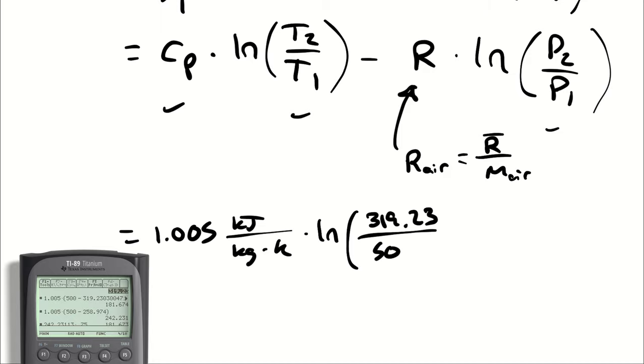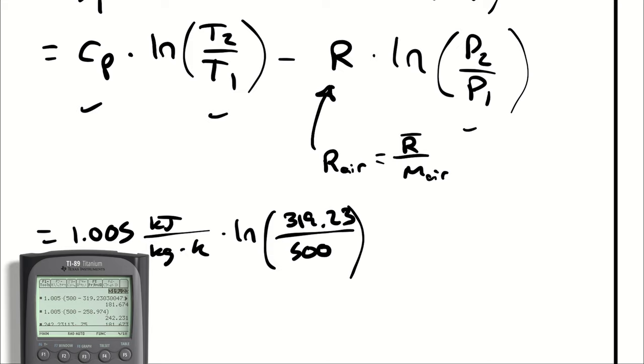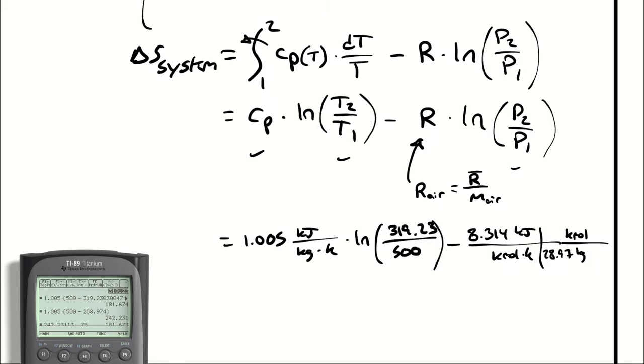Then I'm dividing by T1 which is 500, then I'm subtracting 8.314 kilojoules per kilomole kelvin divided by 28.97 kilograms per kilomole and then I'm out of space.